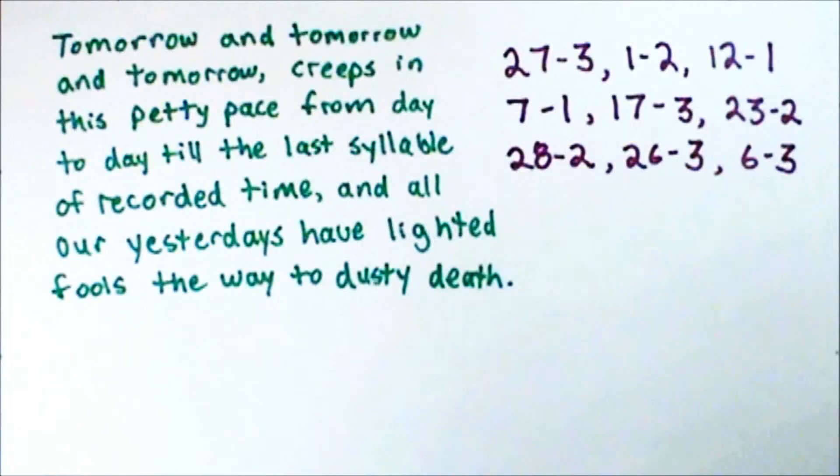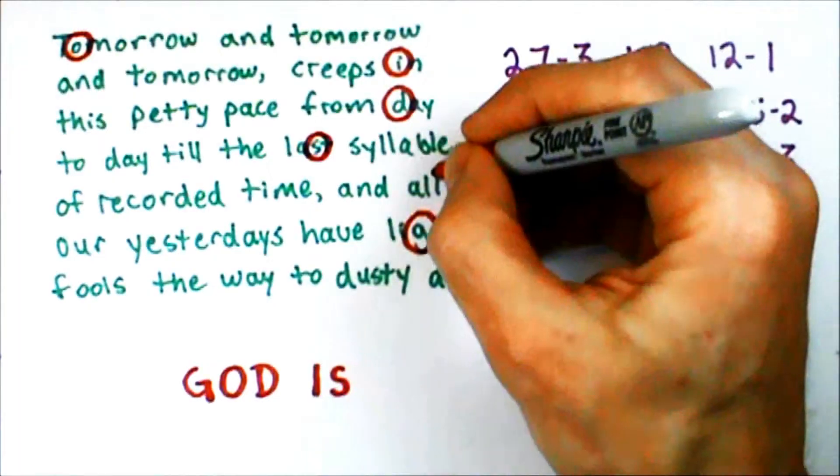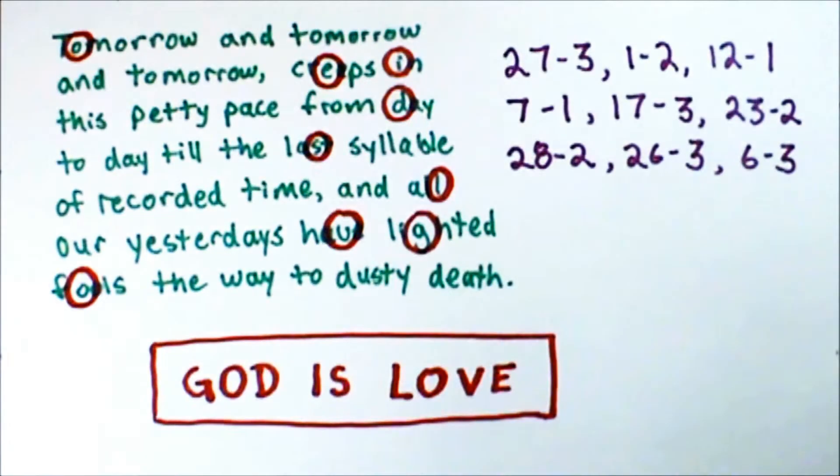To decode the message, you take the numbers and look up the corresponding letters in the key. Book ciphers are especially powerful encryptions because without knowing the key text, what book you use to encrypt your message, it's pretty hard to crack the code.